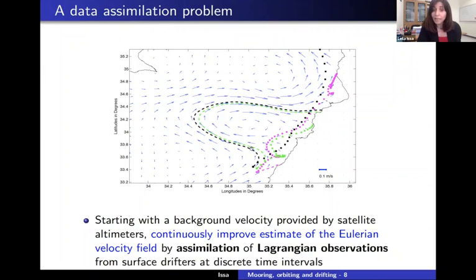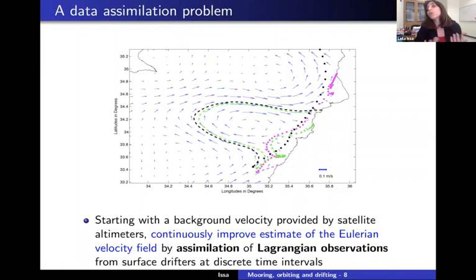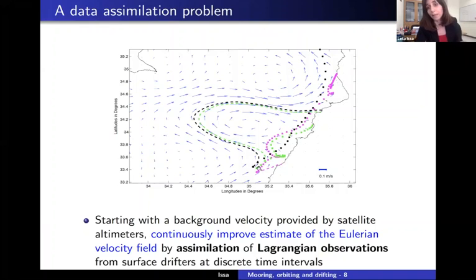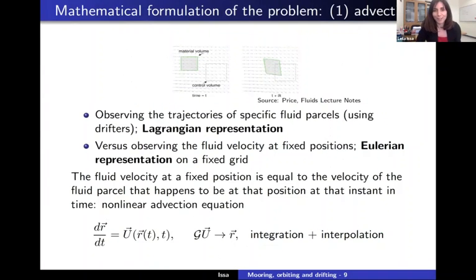If I were to simulate trajectories using the blue altimetric field, which is available every day but inaccurate near the coast, it would take me to the west. Whereas the real data shows that the drifter goes along the coast. So this is an introduction without any math, physics, or equations. Now the fun part starts — the mathematical formulation of the problem.